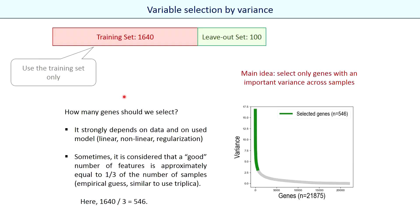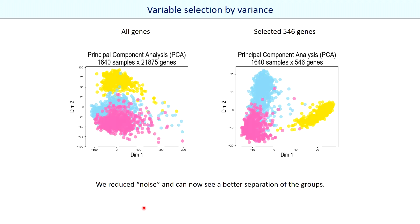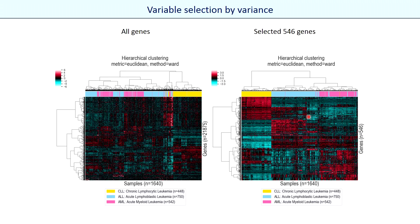In our simple case I propose to reduce the number of parameters using variance. The main idea is to select only genes with an important variation in expression level across samples. If the expression level of a gene is the same for all samples then probably this gene is less useful for prediction. So we select genes with high variance. How many genes should we select? It strongly depends on data and the model used. Here we can empirically consider a good number to be roughly one third of the number of samples — approximately 500 genes. When we visualize data using only selected genes, the separation between groups is better, and it is even more visible in clustering images.